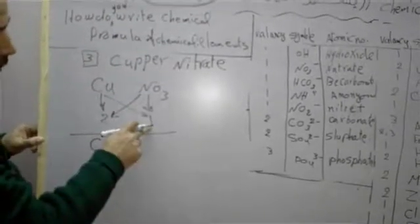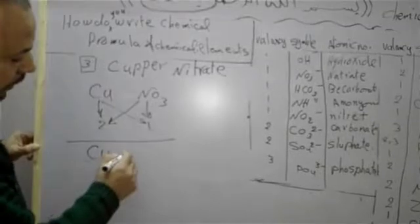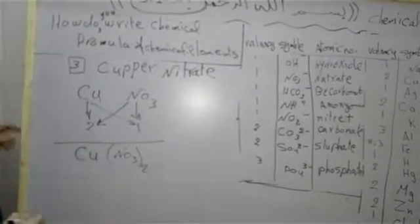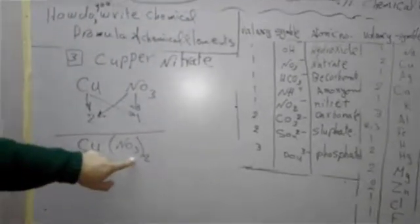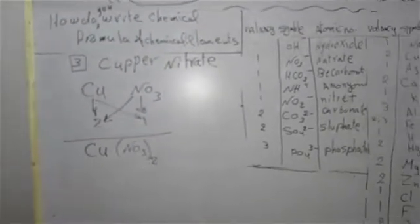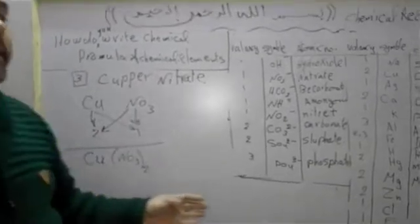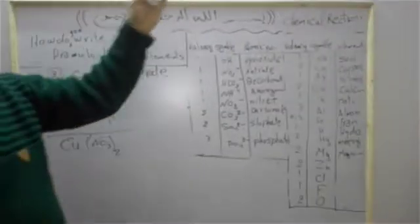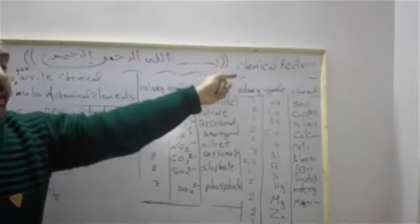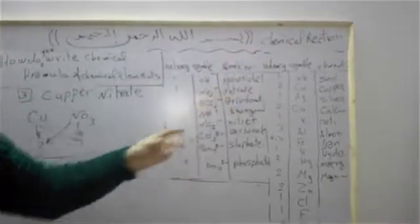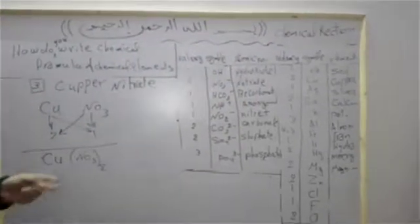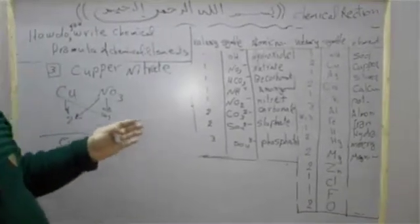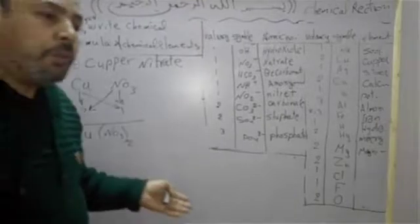Cu, don't write one. NO3 by two. Cu(NO3)2. This is the easy way to write chemical formula to study lesson number one, chemical reaction, and we will write the chemical reaction by easy way.